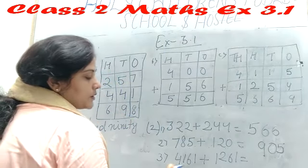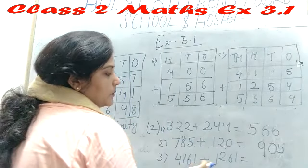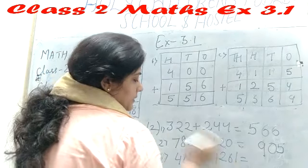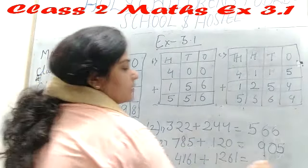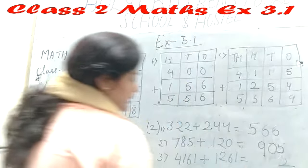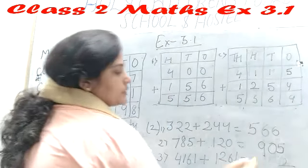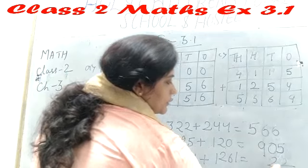Here, the question is 4,161 plus 1,261 equals blank. We can write: 1 plus 1 equals 2. 6 plus 6 equals 12. We can write here 2, 1 carry.